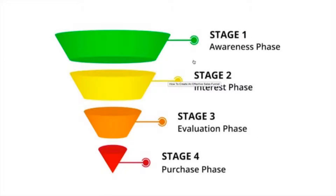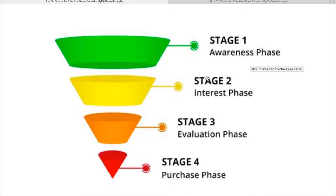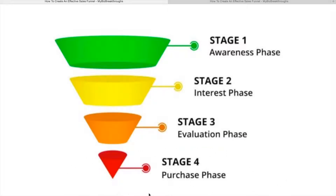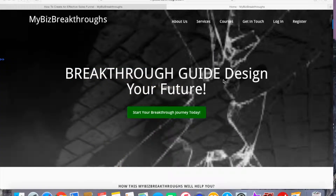Let me show you some basic stages of a sales funnel. The first stage is the awareness phase. The second stage is interest. The third stage is the evaluation phase. And the bottom of your funnel is normally the purchase phase. Let me show you the flow of these stages.